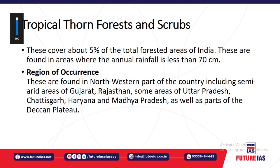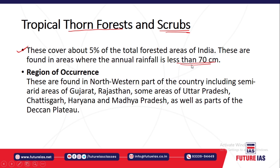Next is the tropical thorn forest or scrub. These are forests and scrubs found in areas where rainfall is very low — less than 70 centimeters or even lesser than that.